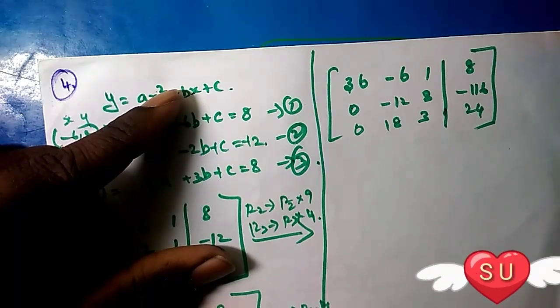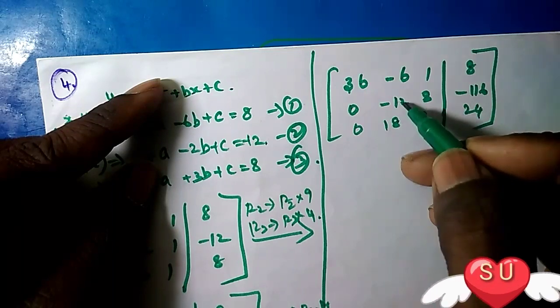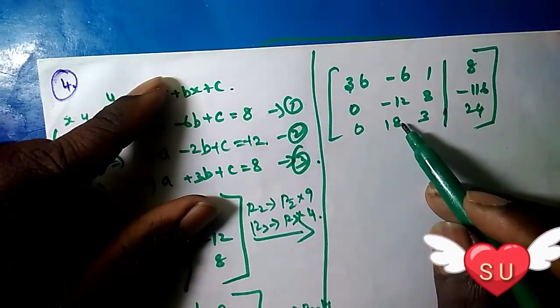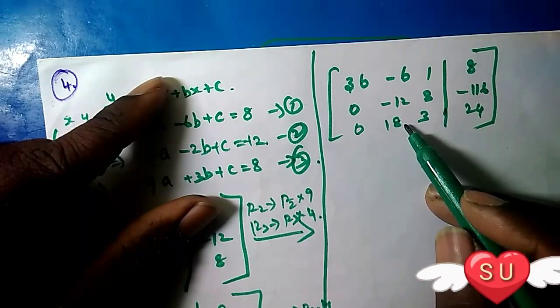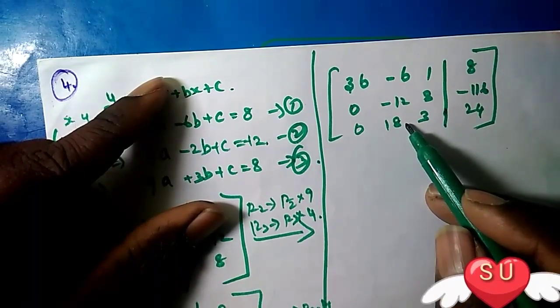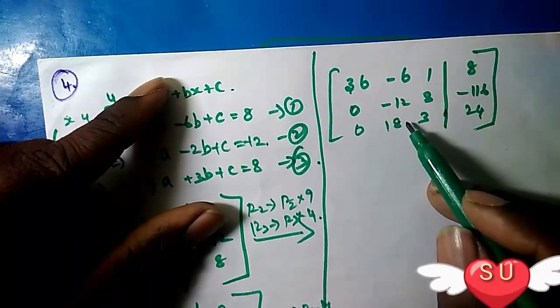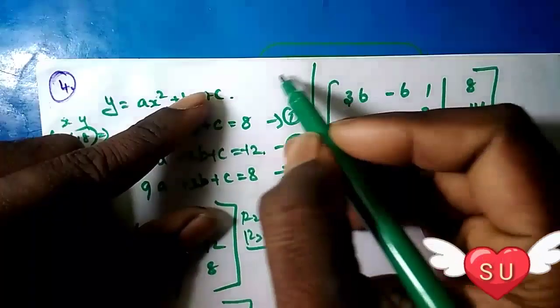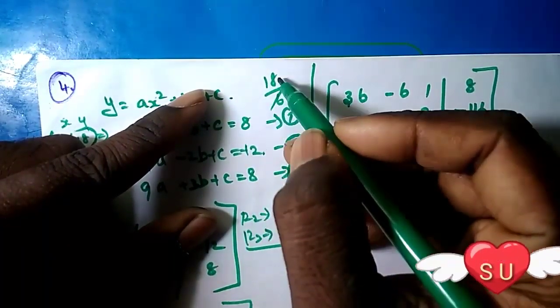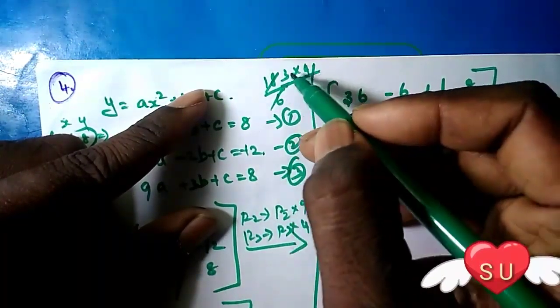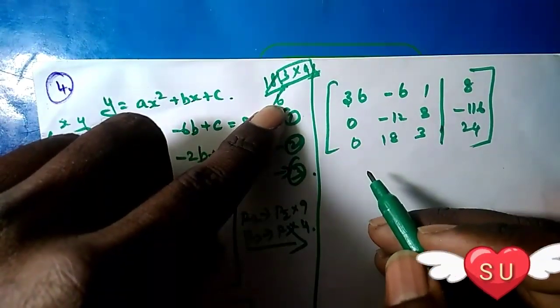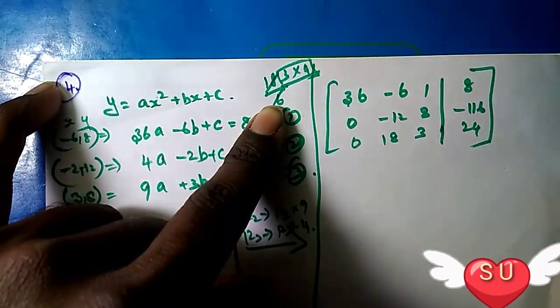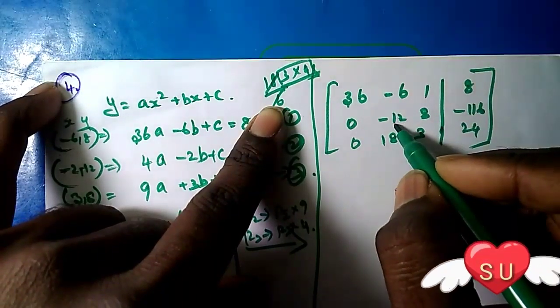Now we'll simplify row 3 by dividing by 18. The 18 divides to give us 6 in one position. We multiply and divide to simplify: dividing row 3 by 6 gives us simplified values. We can also divide row 2 by 2.